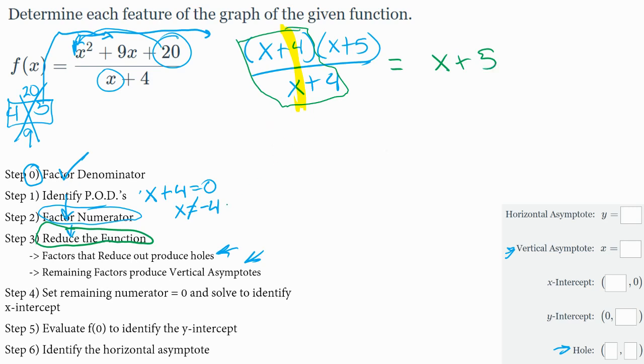But that linear function has a point of discontinuity. That just canceled out, so that point of discontinuity is specifically called a hole. This problem, therefore, has no vertical asymptote. So I come over here to the right, cross out my vertical asymptote. I just have a hole.